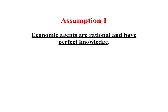The first assumption we make is that economic agents are rational and have perfect knowledge. When we use the term economic agents, what we have in mind are consumers — people who buy stuff — and producers — people who produce stuff or are in business. So the first assumption is these producers and consumers are rational. Rationality simply means you are doing the best you can under the circumstances.